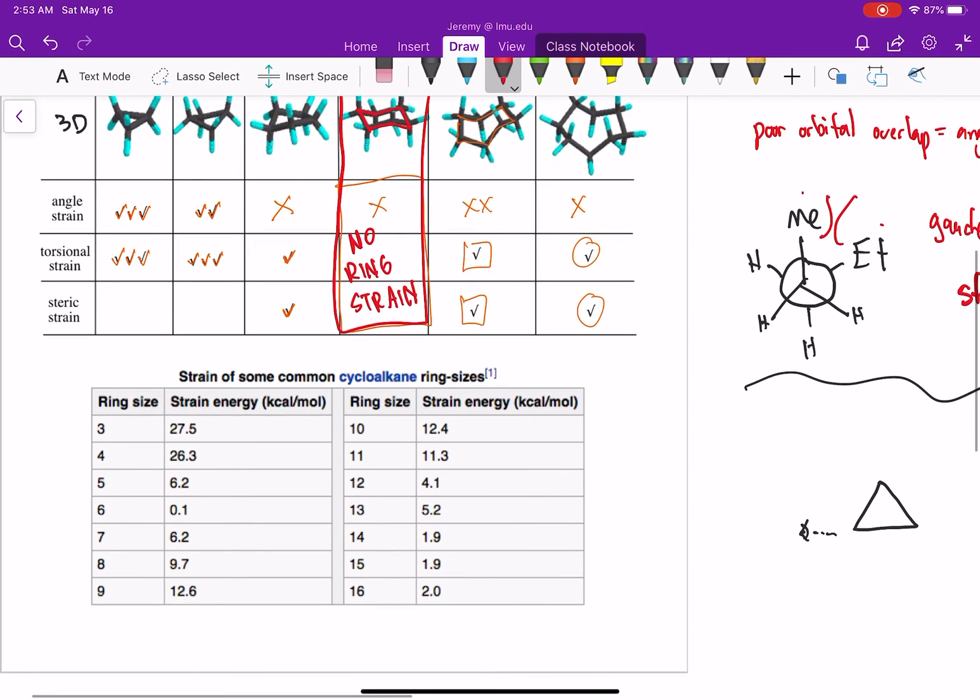So if we take a look at strain of some common cycloalkanes, you can see cyclopropane has a lot of strain, 27.5 kcals per mole. Cyclobutane, 26.3 kcals per mole. A lot less now when we have five rings or more. Cyclopentane only has 6.2. Here's our cyclohexane molecule, and again, essentially zero. And then as we go up to cycloheptane, cyclooctane, so forth and so on, we can see we still have varying amounts of strain as we continue on depending on our ring size.